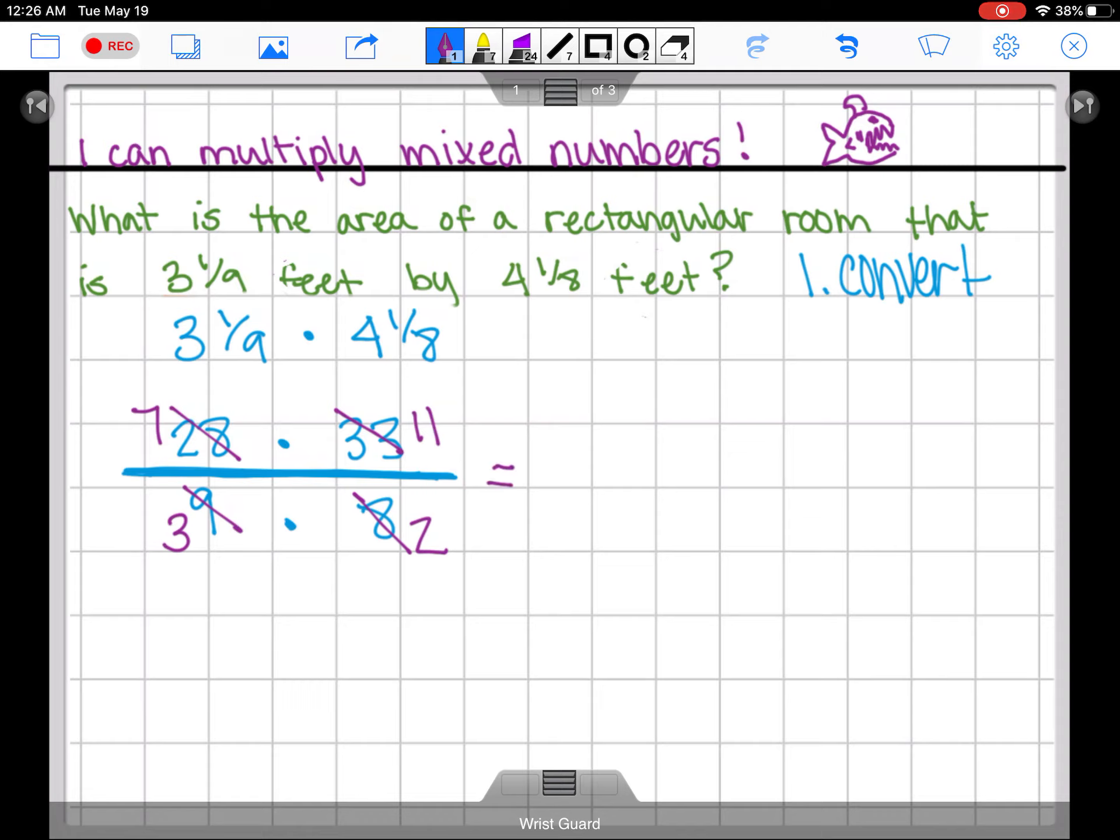This problem looks way more comfortable to work with. So now instead of multiplying 28 by 33 and making a headache for myself, I can multiply 7 times 11 which will be 77, and now I can multiply 3 times 2 which will be 6. Beautiful.